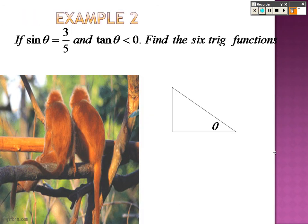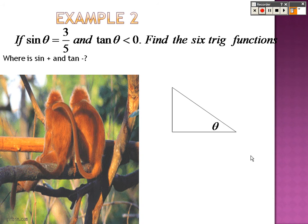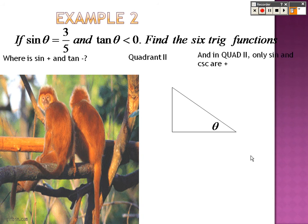Example 2: if sine is 3 over 5, and tangent is less than 0, find the 6 trig functions. You know that sine is positive, and you know that tangent is negative, so where is sine positive and tangent negative? The only spot is in quadrant 2. That's why, if this was in a unit circle, notice how my triangle opens this way. We know that was in quad 2, so only sine and cosecant are positive.